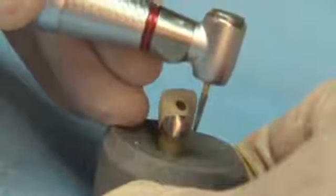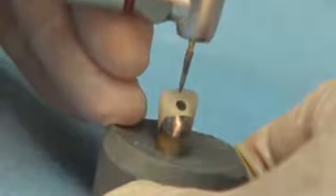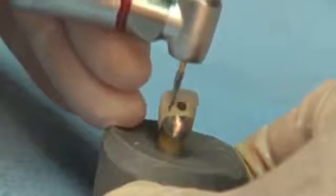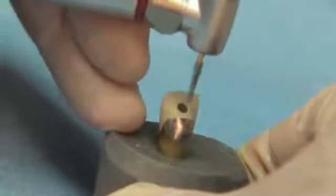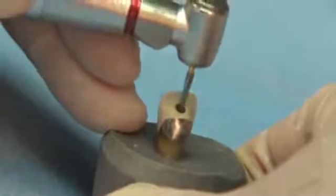After initial endodontic access has been created using the Great White series of burrs, the EndoSafe End Instrument can be introduced into the tooth. EndoSafe End Instruments are available in two sizes, 1.4 mm and 1.8 mm.